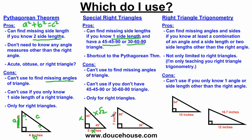On the 30-60-90 triangle, this side would be labeled x, this would be x square root 3, and this would be 2x. If we can identify one of these sides, we can find x and then find the missing sides. That's a major pro compared to the Pythagorean Theorem, but it's also a shortcut to it. If you knew two sides, you could use the Pythagorean Theorem to find the third, but knowing the shortcut will take you less time for a 45-45-90 or a 30-60-90 triangle.